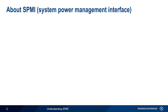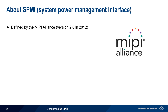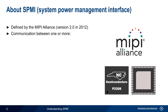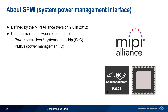SPMI stands for System Power Management Interface and is defined by the MIPI Alliance. The latest version, 2.0, was released in 2012. This protocol is used for communicating between one or more power controllers, or systems on a chip, and one or more power management integrated circuits, or PMICs.